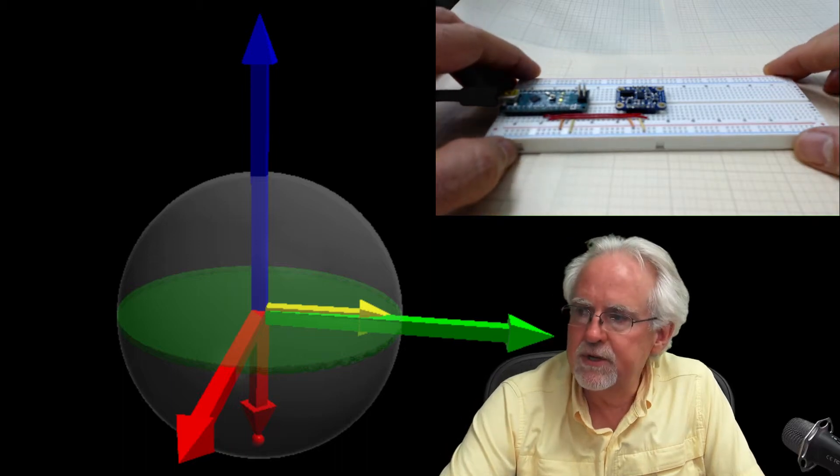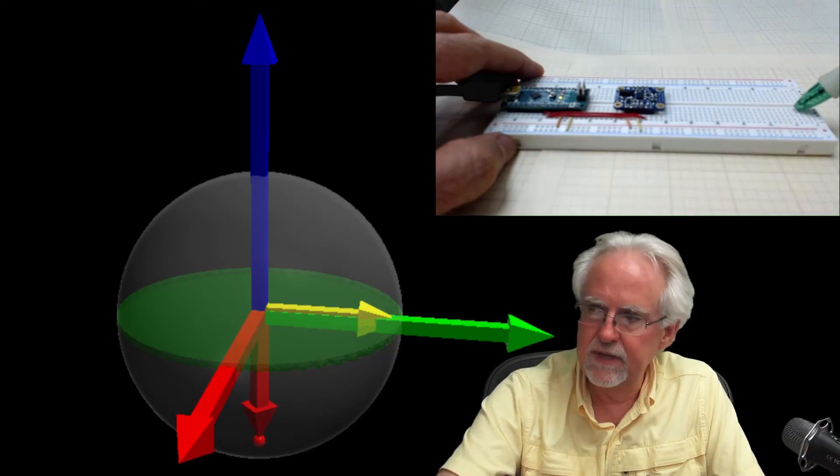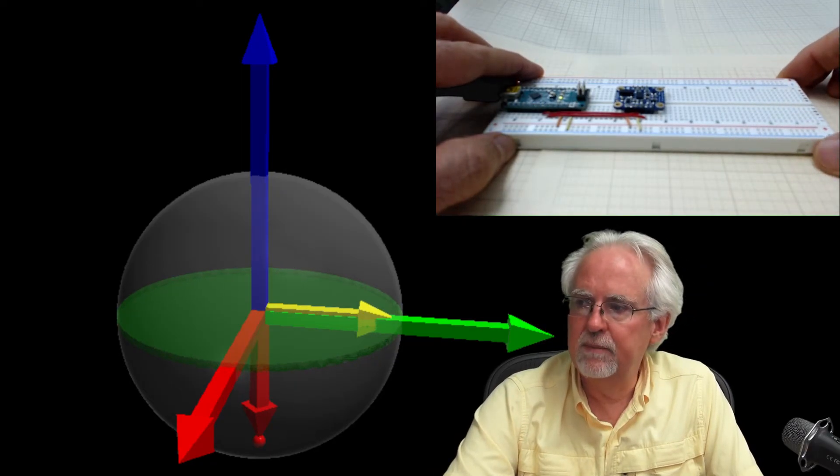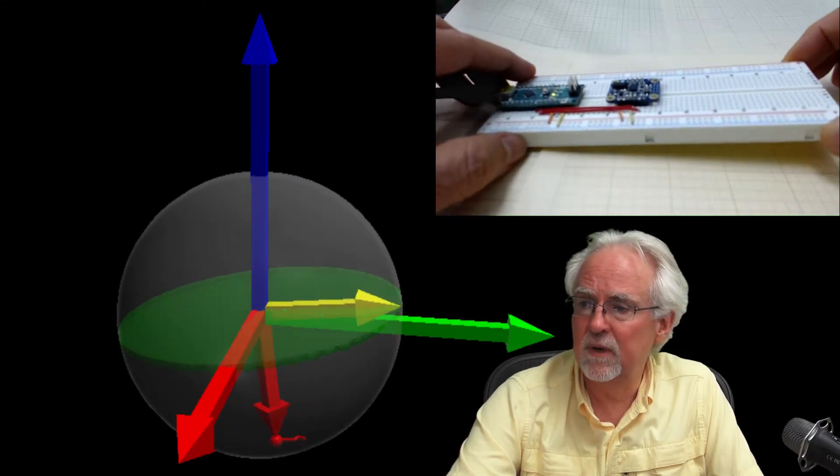And then over here, over here, we have the virtual world. And what I want you to watch is, like, imagine that this is an airplane. OK, here's the nose of the airplane. And imagine that we have an airplane. The nose lifts up in the real world. What happens in the virtual world? The nose lifts up.